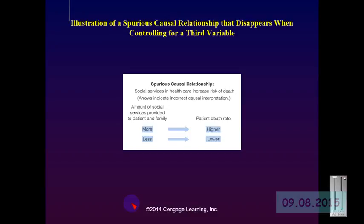Spurious causal relationship is one of those terms that is important to remember when reading research, especially when reading criticisms of research. Many times authors will simply say the relationship is spurious and not go into great detail — what they are trying to say is that something other than the independent variable is causing the change in the dependent variable.